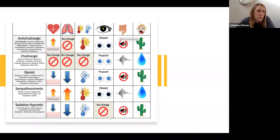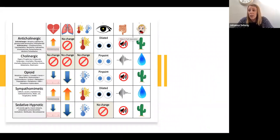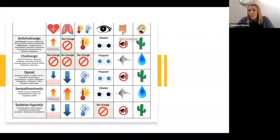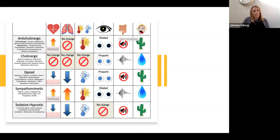Common anticholinergic drugs you may come across include amitriptyline and other antidepressants in that category, antihistamines, anti-muscarinics such as solifenacin and oxybutynin used in Parkinson's or incontinence, antipsychotics like olanzapine and clozapine, and anti-emetics like prochlorperazine and promethazine. They would all present with the anticholinergic toxidrome: tachycardic, high temperature, wide pupils, and very dry.